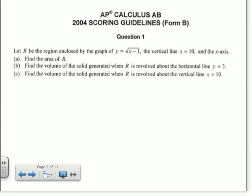Okay, 2004 Form B, question number 1 on the AP Calculus Exams. It says, let R be the region enclosed by the graph of y equals the square root of x minus 1. If you see what that one looks like, shifted over 1, it looks like the square root function. The vertical line x equals 10, let's say here's 10, and the x-axis. So this is R.